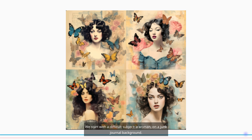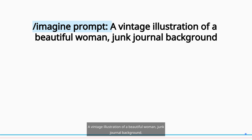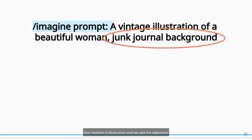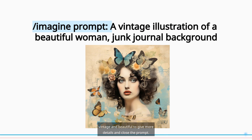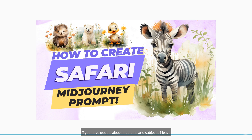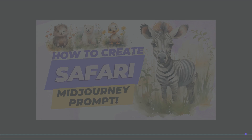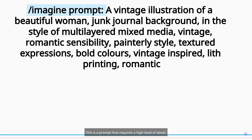A woman on a junk journal background. A vintage illustration of a beautiful woman — junk journal background. Our medium is illustration, and we add the adjectives vintage and beautiful to give more details and close the prompt. If you have doubts about mediums and subjects, I leave you in the description a case that helps you understand this rule.